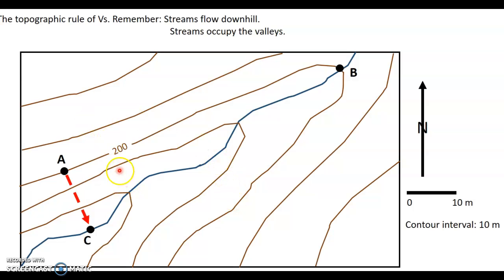Now we can also figure out what these elevations are. Remember, now that we know that our contour interval is 10 meters, and that point C is lower elevation than point A, then that means that the next contour intervals must be 190 meters and 180 meters respectively. So at point C, the elevation is approximately 175 to 177 meters, something like that.